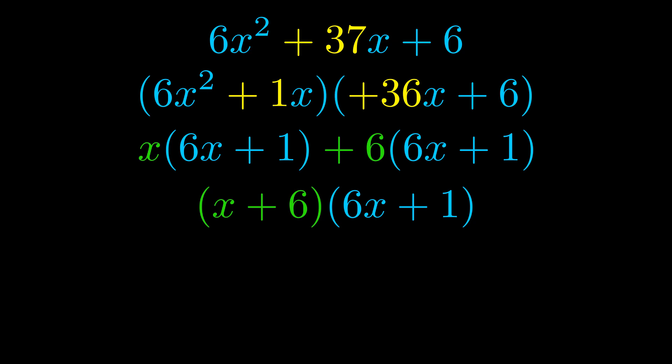Those blue values will become one of our factors and we will combine the two green values, the GCFs that we pulled out, to get the other one. And that is our fully factored equation.